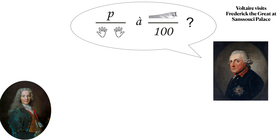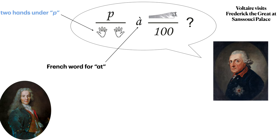This message has two fractions, with a French word in between and a question mark at the end. The first fraction is the letter P in the numerator, with two hands in the denominator. This could be interpreted as two hands under the letter P. The word after this initial fraction is the French word for 'at', an A with an accent mark. The next fraction has a saw, a tool, in the numerator, and the number 100 in the denominator. We could interpret this as a hundred under a saw. And finally, we have a question mark.